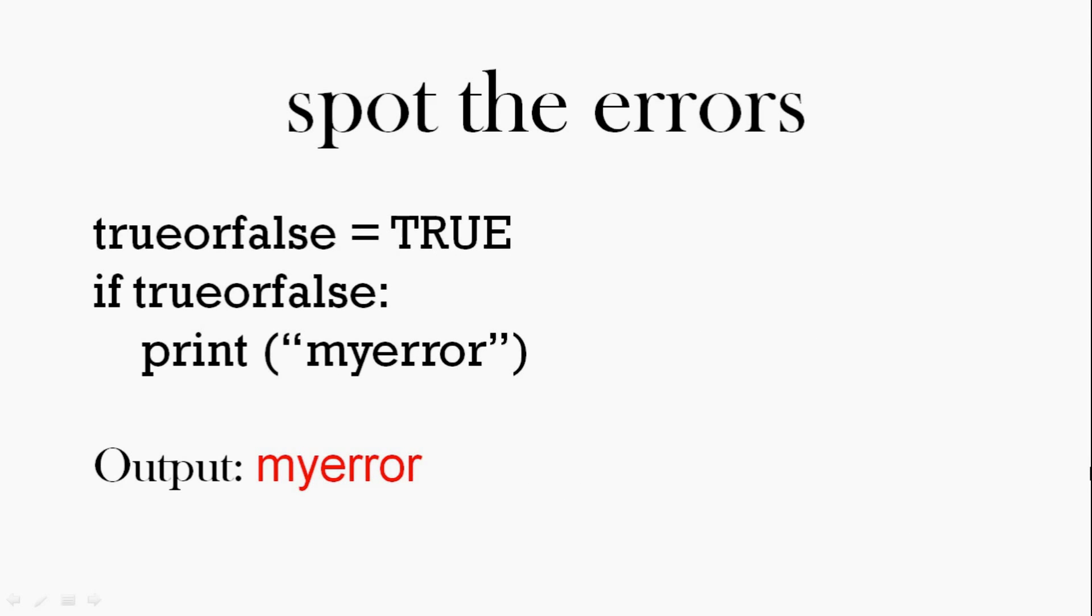So here's the proper code. So we have our colon, true or false as one word, our brackets in the print statement, and if it's true, we will print my error.